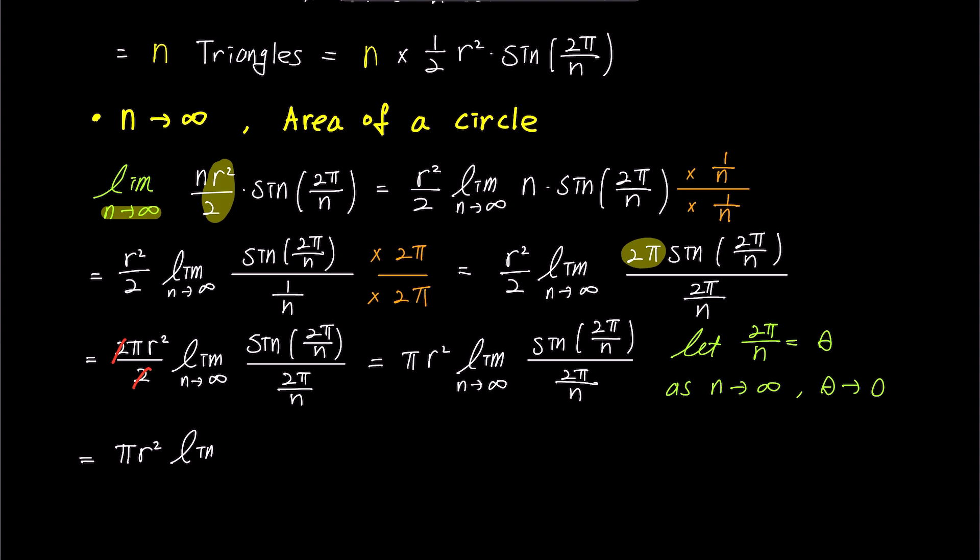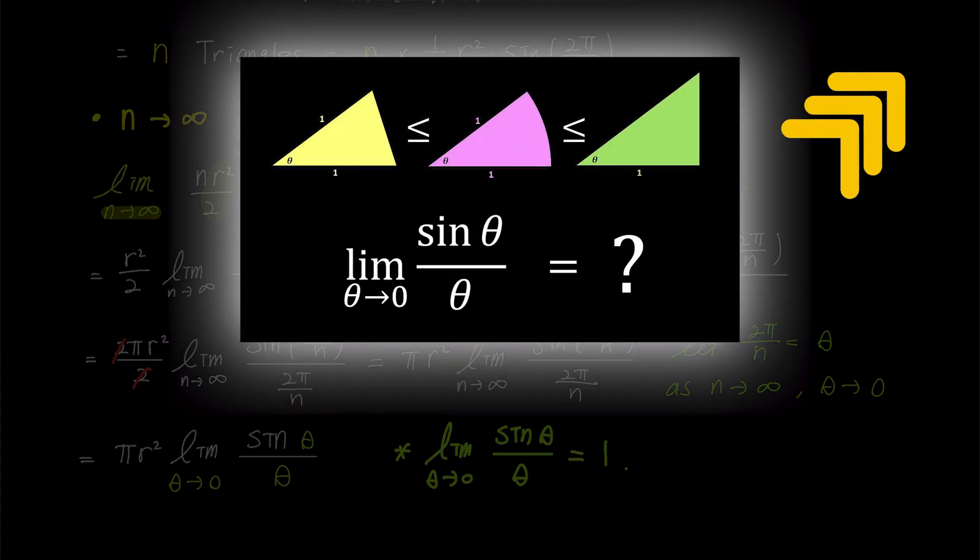we get π times r squared multiplied by the limit of sin theta over theta as theta approaches 0. In this context, the limit of sin theta over theta as theta approaches 0 is proven to be 1 in another video, which you can explore through the link in the upper right corner.